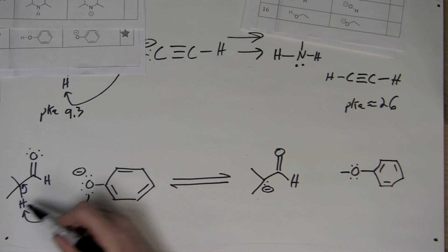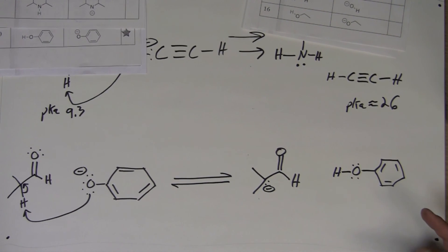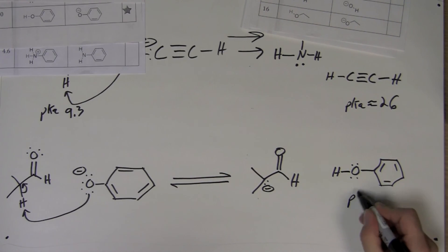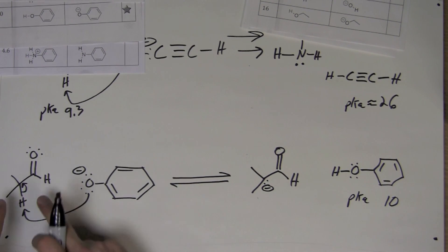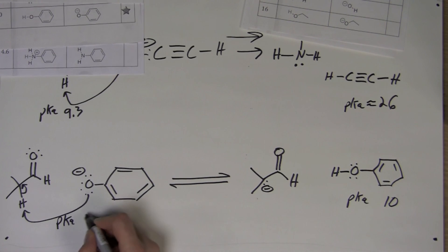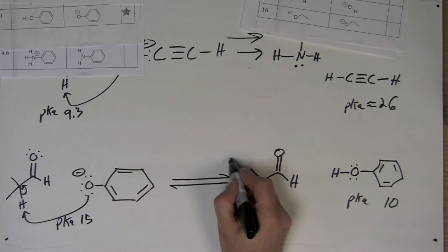...has a pKa of 10, and this acid has a pKa of 15. Therefore, in this case, the equilibrium is shifted to the left.